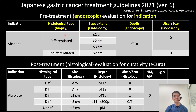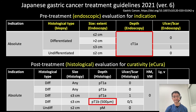Indication is determined based on histological type, tumor size, depth of tumor invasion, or presence of ulcer scar — and these are all endoscopic findings. Some doctors say that T1B 500 micron is an indication of endoscopic treatment, but this is wrong, because we cannot measure the length of tumor invasion by endoscopy.